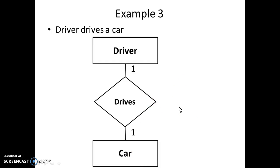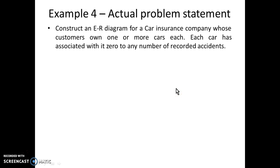Let's take an actual problem statement: construct an ER diagram for a car insurance company where customers own one or more cars each and can be associated with any number of recorded accidents. From this statement we identify the nouns: 'car' is a noun and becomes an entity, 'customer' is a noun and becomes an entity, and 'accident' is an event that gets recorded, so it also becomes an entity.